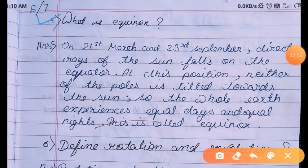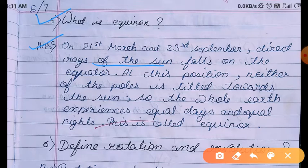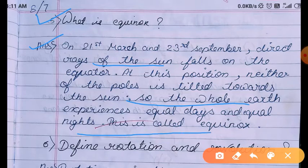Question Number 5: What is an equinox? On the 21st March and 23rd September, direct rays of the sun fall on the equator. At this position, neither of the poles are tilted towards the sun, so the whole Earth experiences equal day and equal night. This equal day and night is called an Equinox.